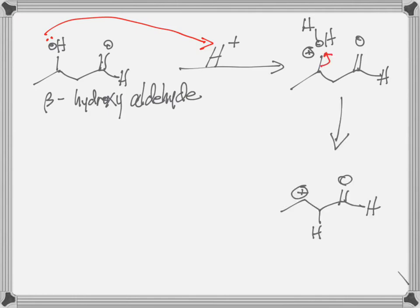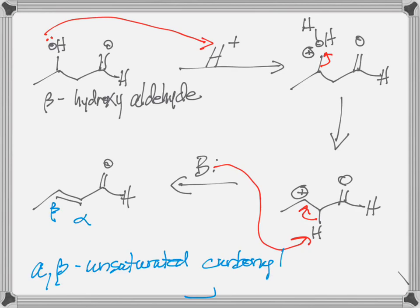So the water leaves and gives us this carbocation. The next step is deprotonation at the alpha carbon to give us the alpha-beta unsaturated carbonyl compound. This happens very readily in acid because water is an excellent leaving group.